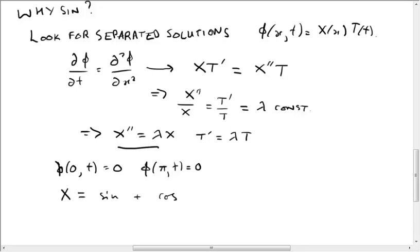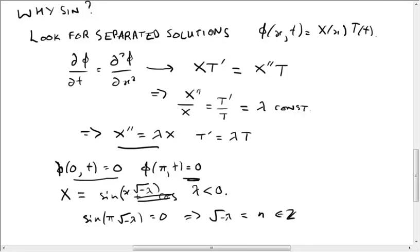And actually with some coefficients. And the cos is not going to contribute because it cannot vanish at zero. So there's no cos involved. So X is just a sine. Sine of x root minus lambda. So this is where lambda is negative. So this is why we were interested in sine. And this second condition means that sine of pi times root minus lambda equals 0, which means root minus lambda is an integer. So this is why we were interested in looking at initial conditions of the form sine nx. Okay, so that's the heat equation.